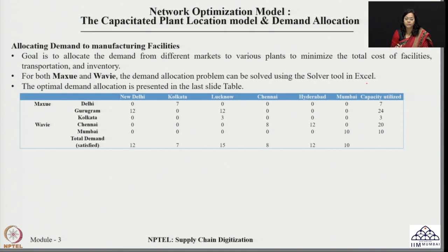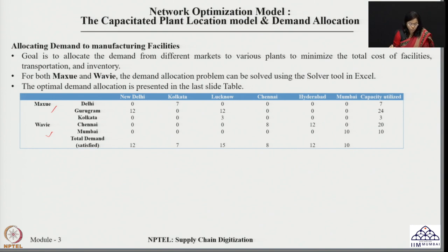The solution is reproduced here for reference. For both Maxui and Wavy, we now have the quantities required to be moved from respective manufacturing plants to corresponding markets, showing how capacities are utilized and whether demand is completely fulfilled.